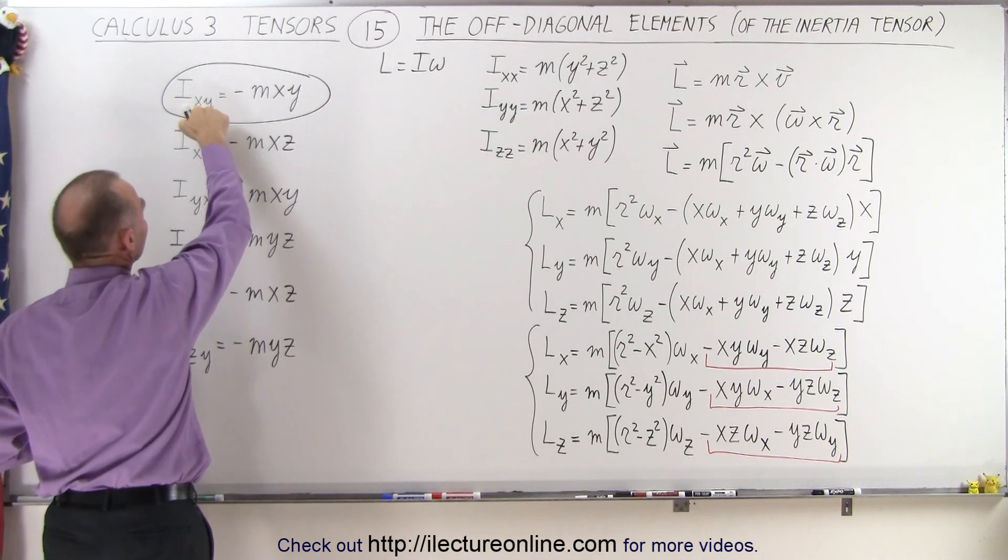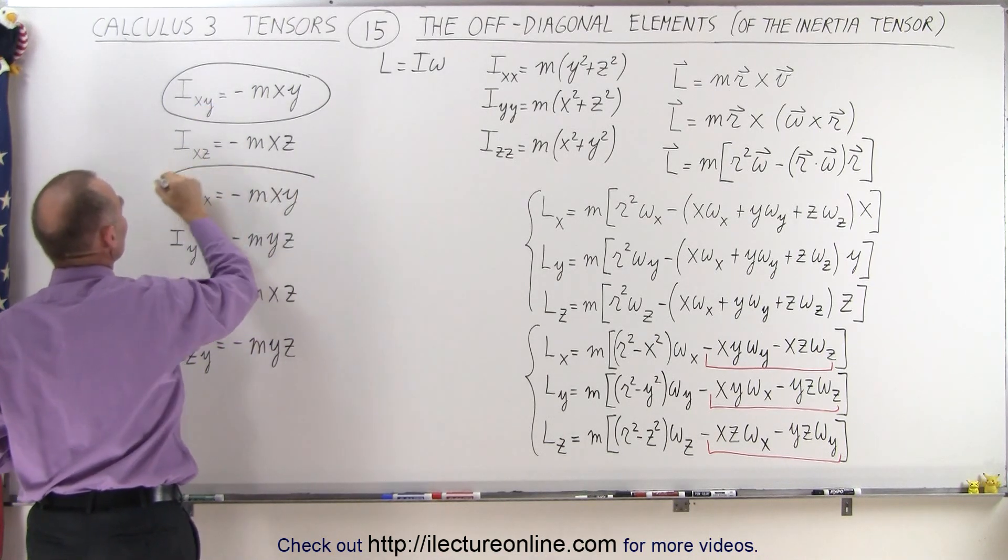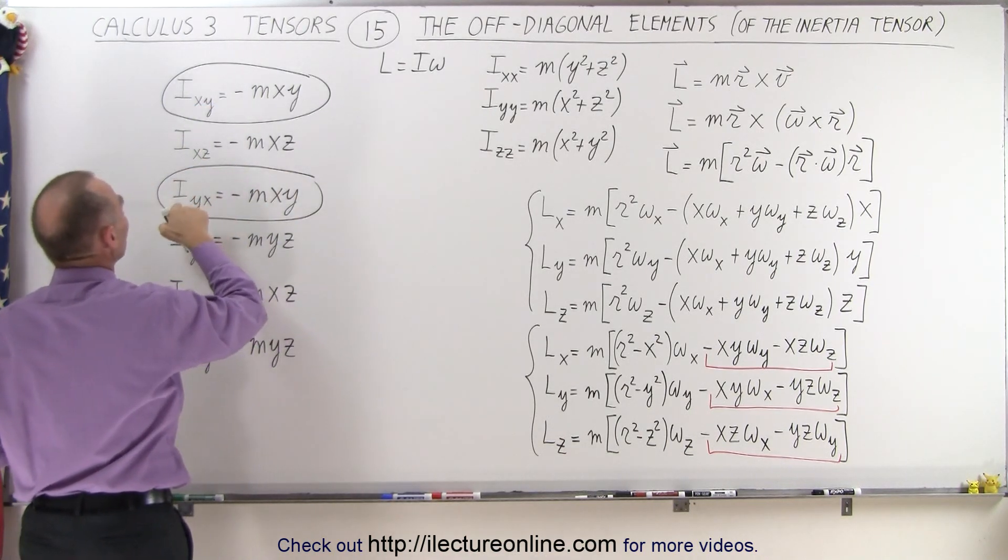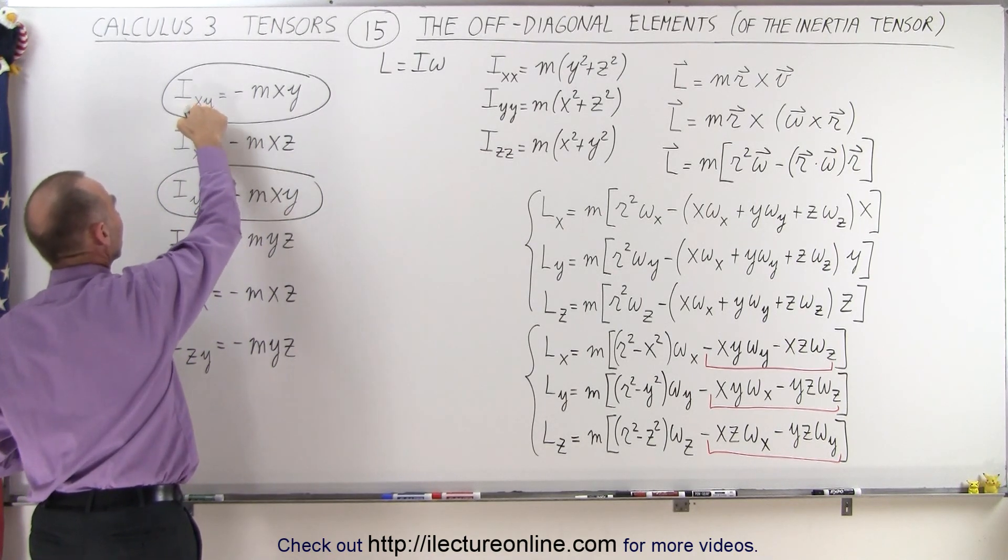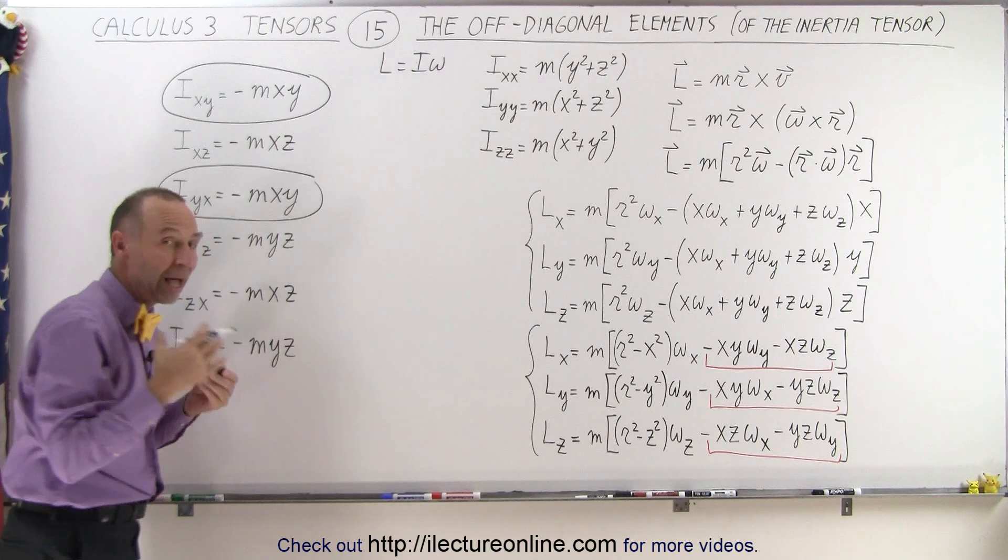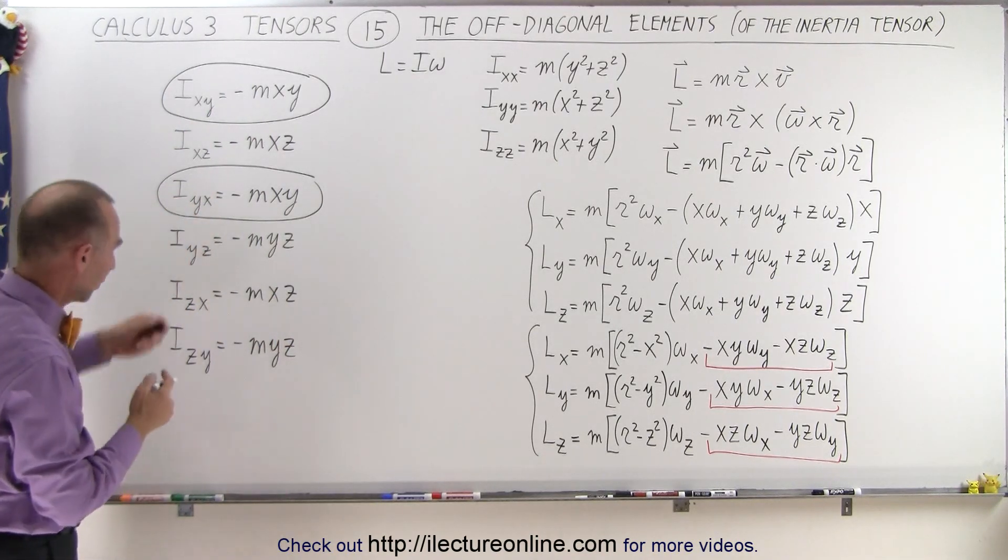So we can say that the moment of inertia of xy, the off-diagonal element xy, is the same as the moment of inertia yx. So you can see that there's a similarity here. xy and yx, those two off-diagonal terms are actually equal to one another.